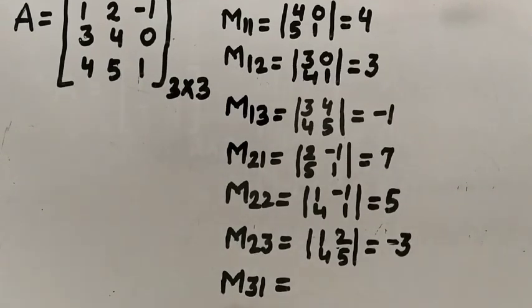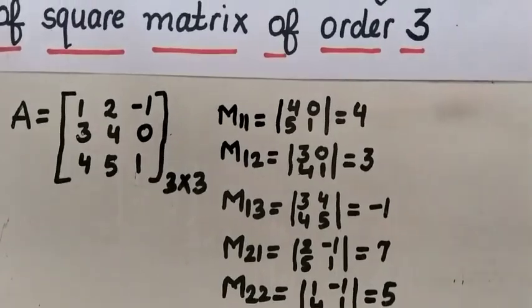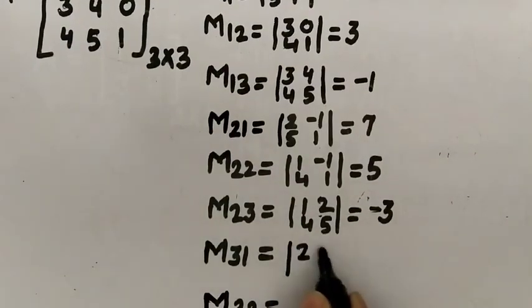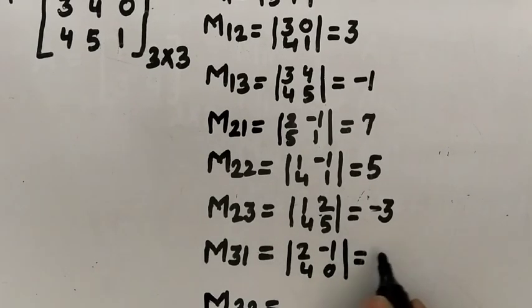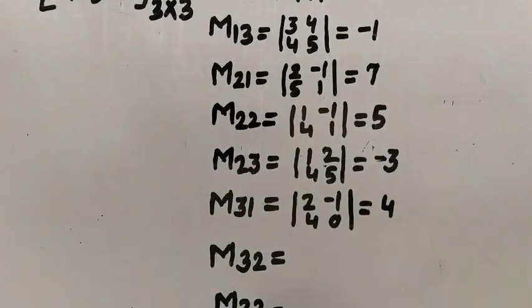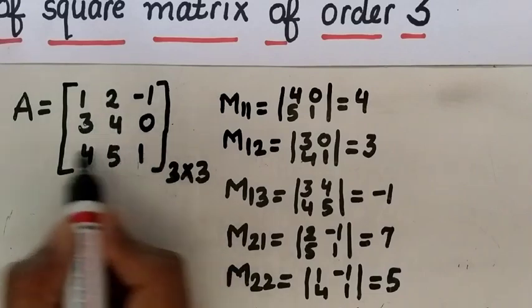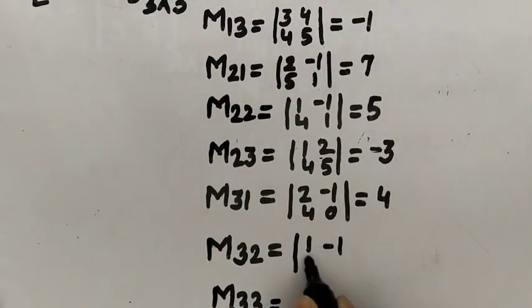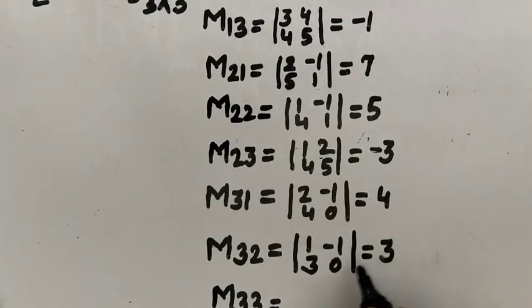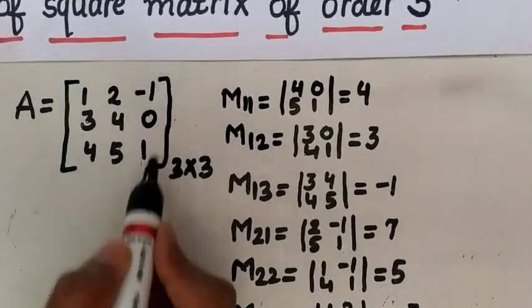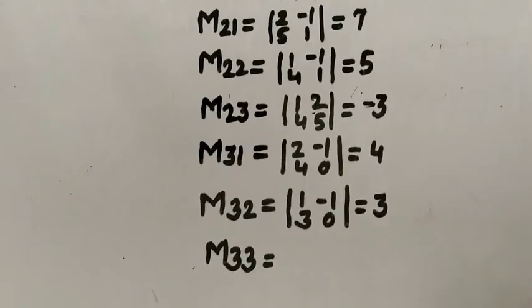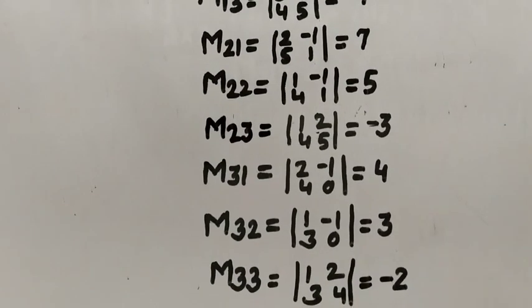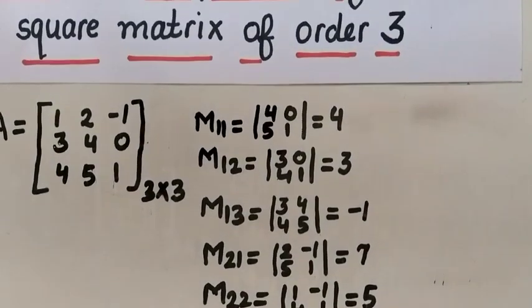For M22: delete row and column of a22, remaining is [1, −1; 4, 1], determinant is 1+4 = 5, so M22=5. For M23: remaining is [1, 2; 4, 5], determinant is 5−8 = −3, so M23=−3. For M31: remaining is [2, −1; 4, 0], determinant gives 0+4 = 4, so M31=4. For M32: remaining is [1, −1; 3, 0], gives 3, so M32=3. For M33: remaining is [1, 2; 3, 4], gives 4−6 = −2, so M33=−2.